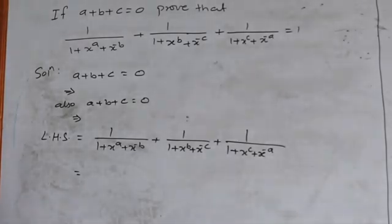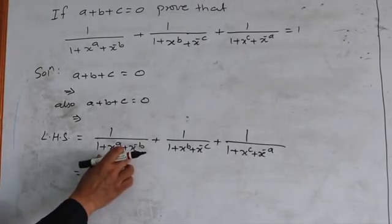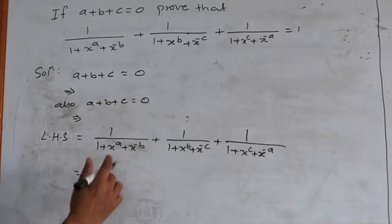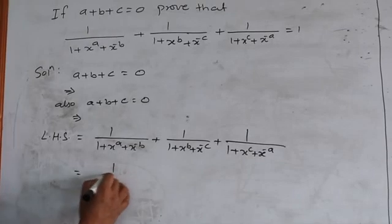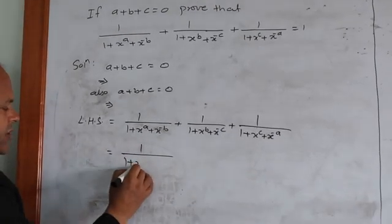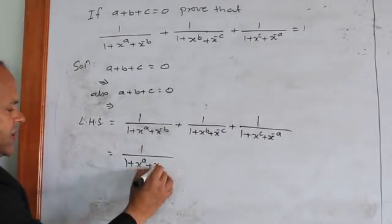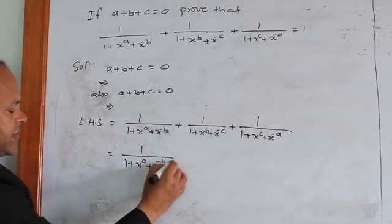Now to solve this, the first fraction we will keep as it is — do not change it. So the first fraction remains: 1 upon 1 plus x raise to the power a plus x raise to the power minus b.